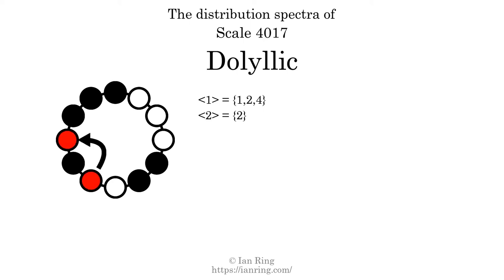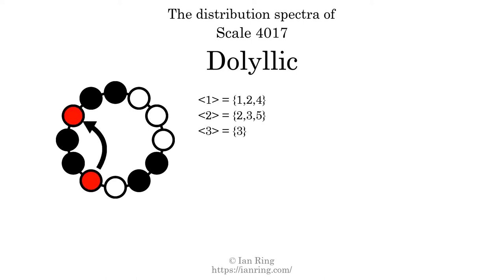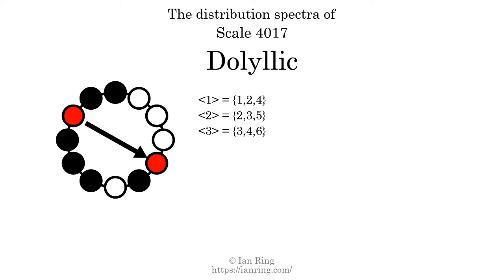The generic interval of 2 scale steps comes in 3 different specific interval sizes: 2 semitones, 3 semitones, and 5 semitones. The spectrum width of this generic interval is 3. The generic interval of 3 scale steps comes in 4 different specific interval sizes: 3 semitones, 4 semitones, 6 semitones, and 7 semitones.